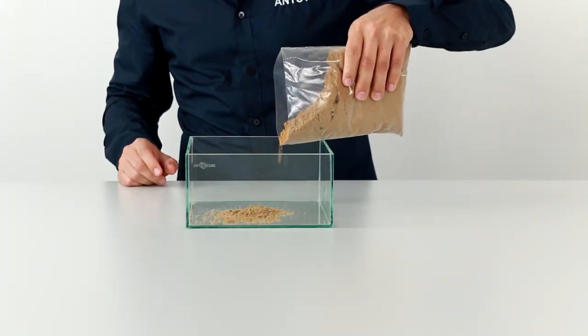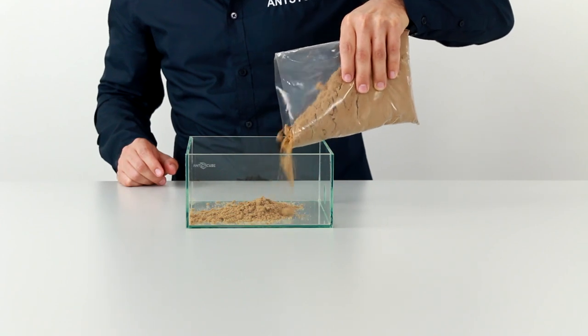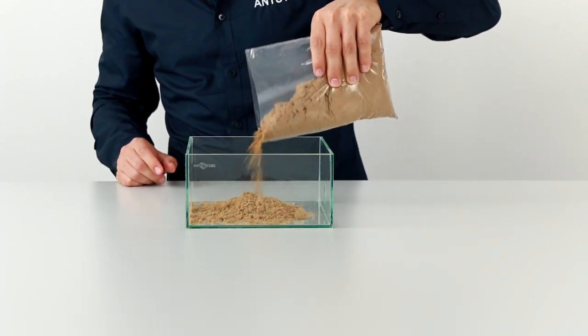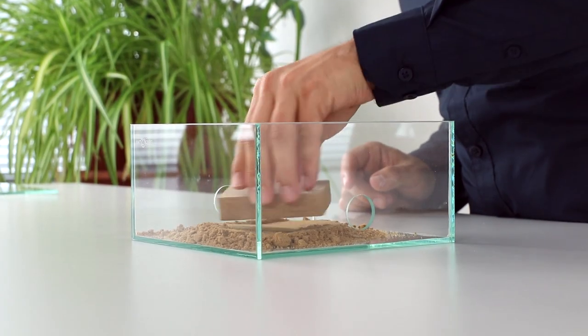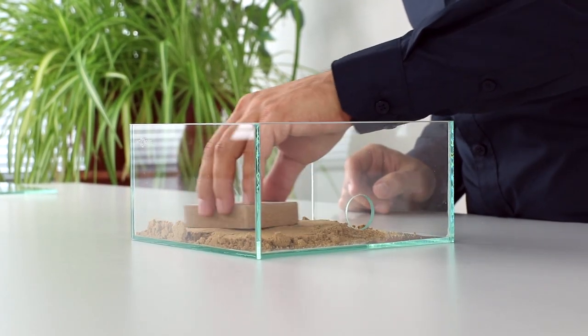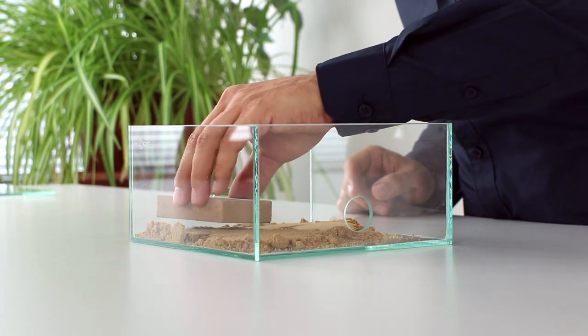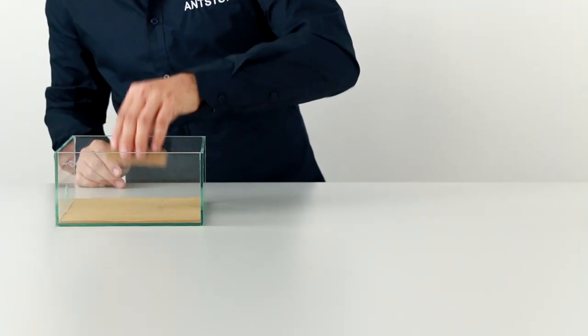First we fill the arena with the substrate meadow. It should be noted that we fill only a very thin layer of 1-2 mm. If there is too much substrate there is a risk that the animals will burrow into the arena instead of nesting in the designated farm or nest area.